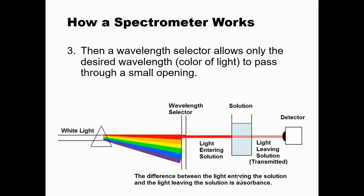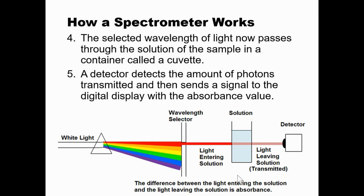Next, the wavelength selector allows only the desired wavelength—that's the color of light—to pass through a small opening. It's really simple: it's basically a piece of hard cardboard with a hole in it that moves up and down to whatever color of light you want to shine through. The selected wavelength of light now passes through the solution in a container called a cuvette.